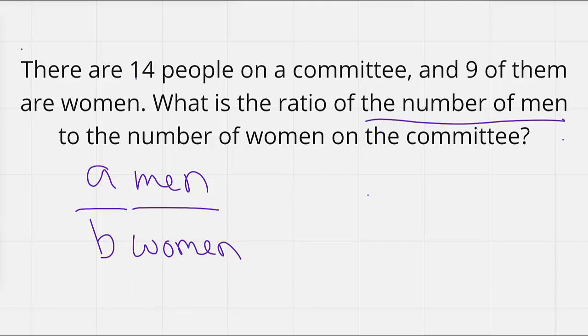Now, going back and looking at the first sentence, it told us that there are 14 people on this committee, and that 9 of them are women. So we know that 9 of them are women, and we mentioned that was going to be our denominator.